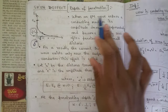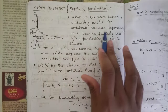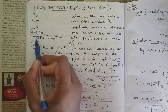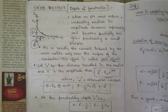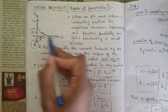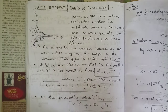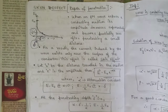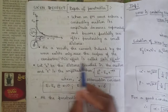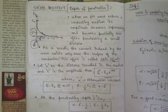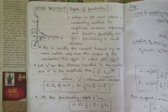So what is the skin effect? When an EM wave enters a conducting medium, its amplitude decreases exponentially and becomes partially zero after penetrating a small distance. This small distance is the depth of penetration. As a result, the current induced by the wave exists only near the surface of the conductor — that is why this effect is called the skin effect.